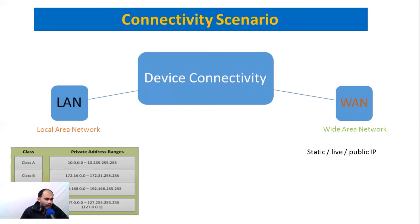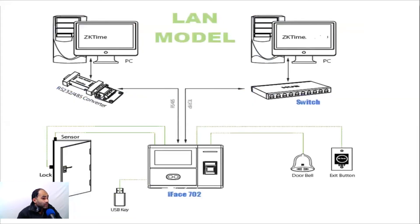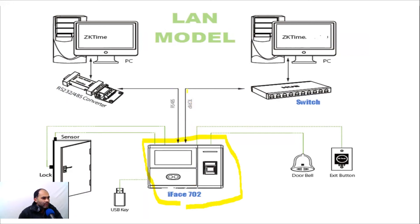Now let's discuss the LAN scenario and jump to the next slide. This is the LAN model. I am not very good at drawing, but we have the ZKTeco F702 biometric machine. This machine will be configured via TCP/IP using an RJ45 connector, which will connect to a switch.